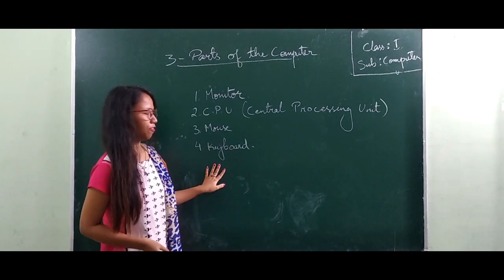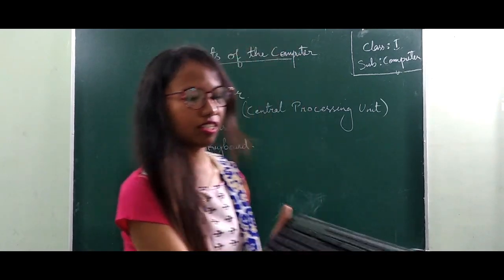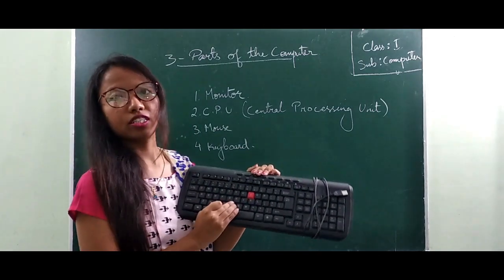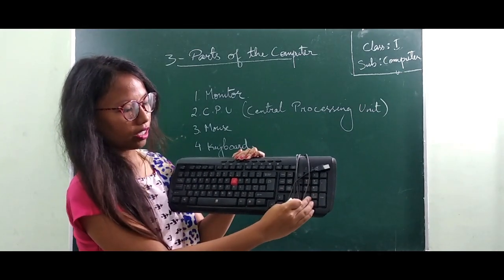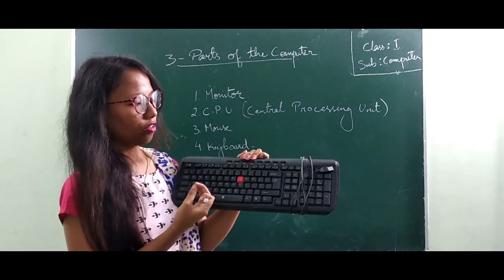Lastly we have keyboard. A keyboard is also an input device. Let me show you what the keyboard is. This is a keyboard. There are many small buttons here. These small buttons are called the keys. We have the alphabet keys, the number keys, and also different types of keys which function differently.